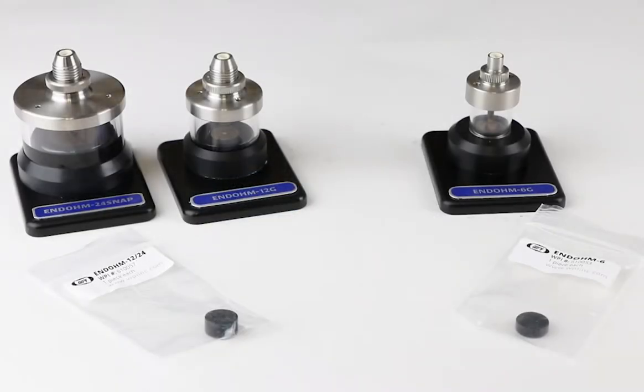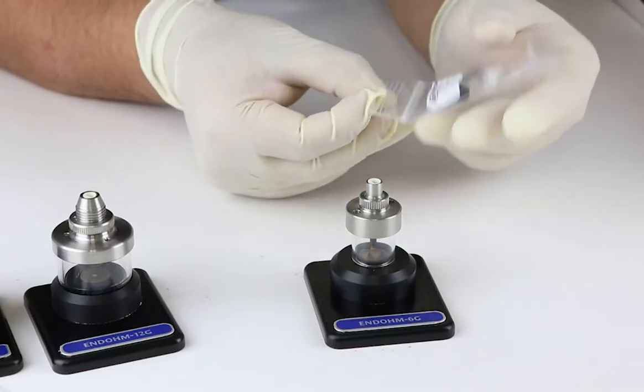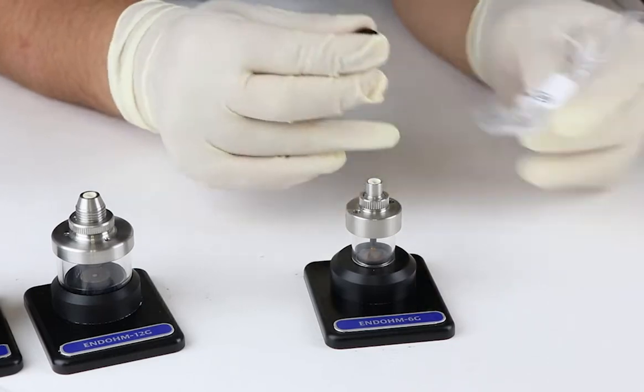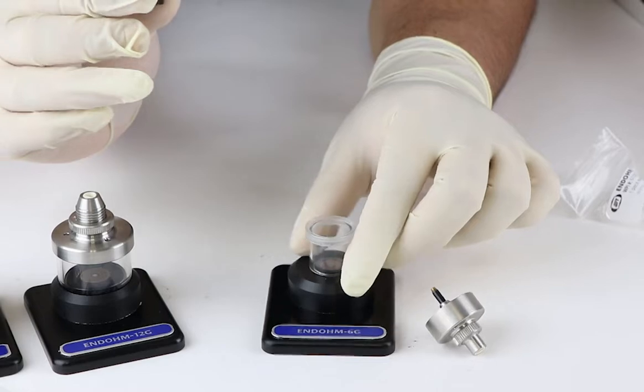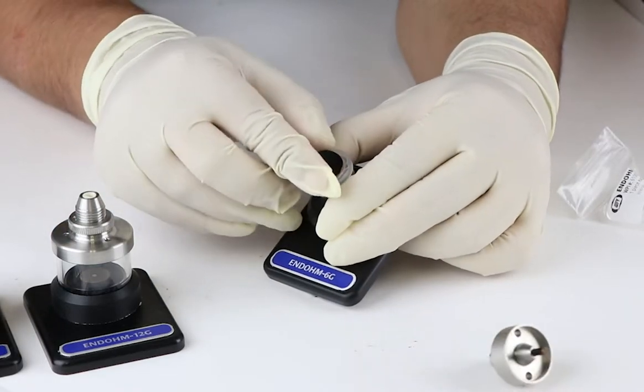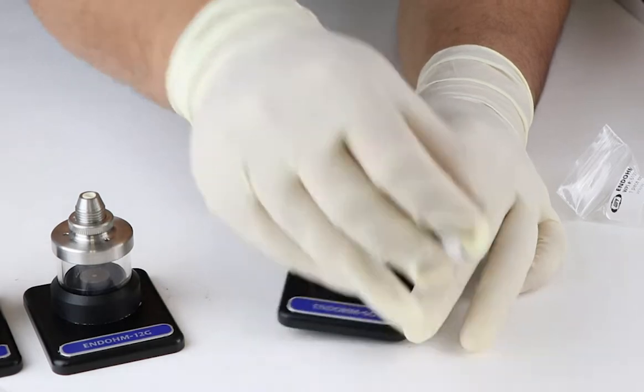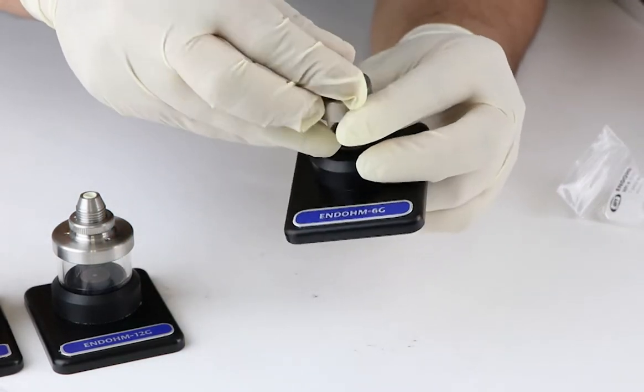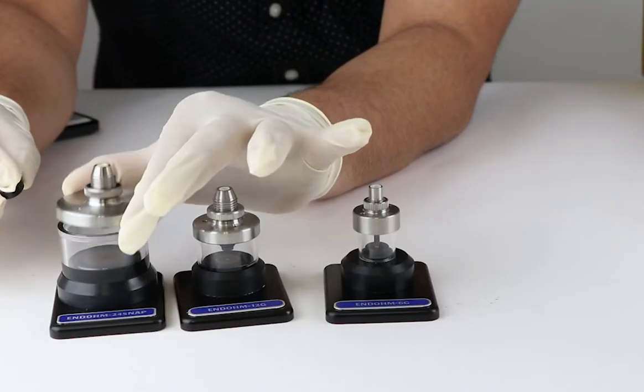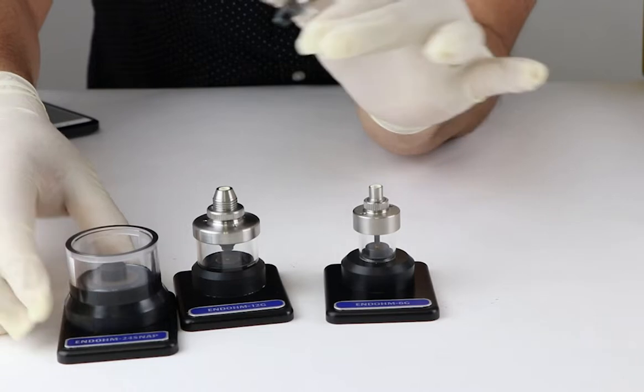In your endome chamber box, you'll notice a black colored disc called a spacer disc. A 4mm spacer disc (part number 6100053) is used for endome 6G, and a 6mm spacer disc (part number 6100057) is used for either endome 12G or endome 24 snap.